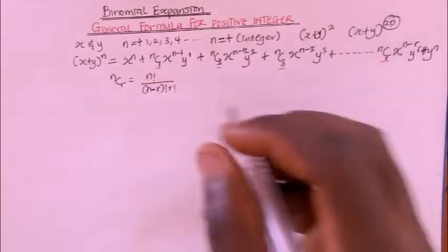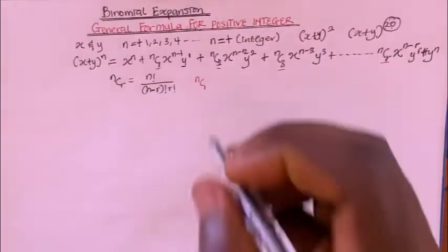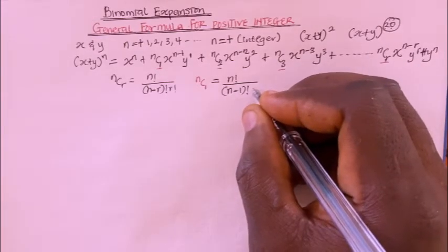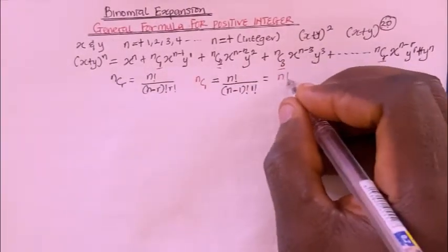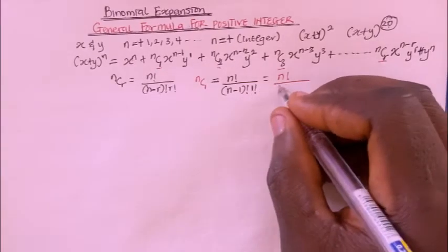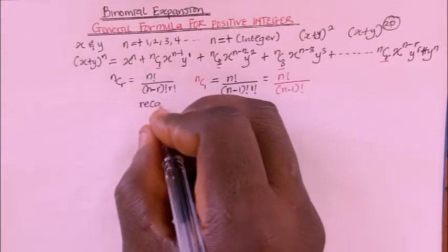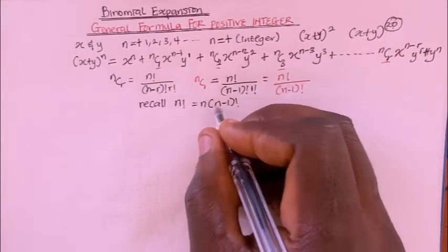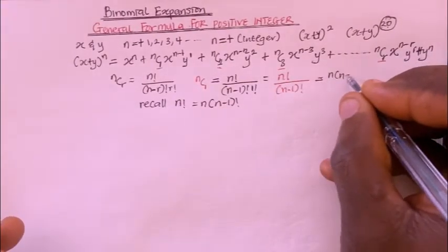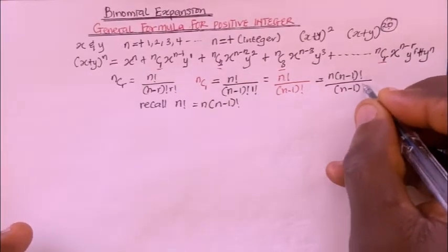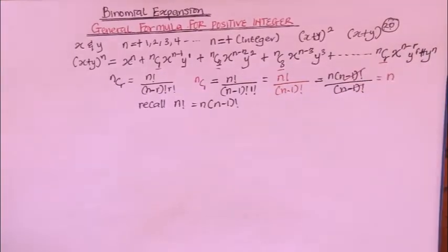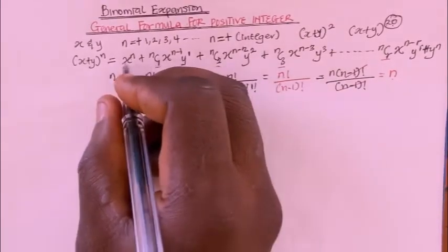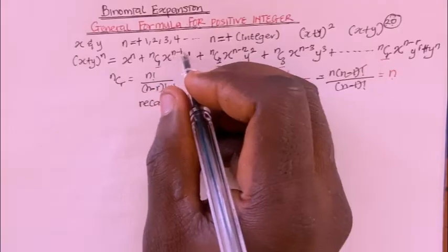So for nC1, that is n factorial divided by n minus 1 factorial times 1 factorial. I can write n factorial as n times bracket n minus 1 factorial. So putting it here, I have n times bracket n minus 1 factorial divided by n minus 1 factorial. The n minus 1 factorials cancel, and I'm left with n. So nC1 equals n. That means I can write the second term as n times x to the power of n minus 1 times y to the power of 1.